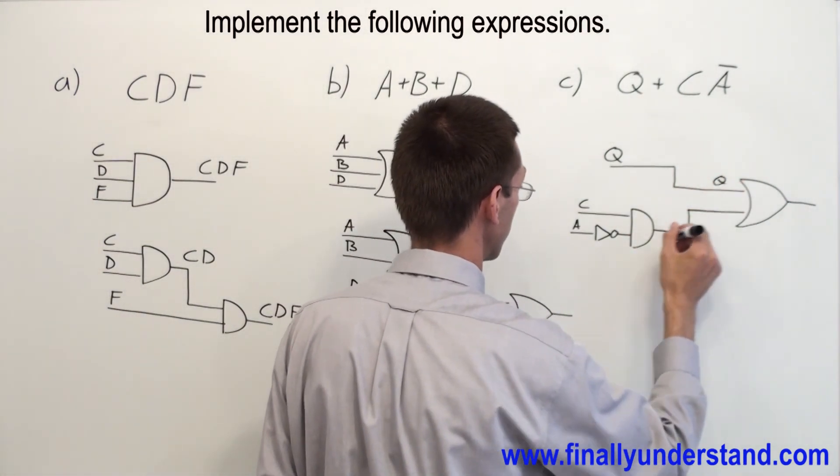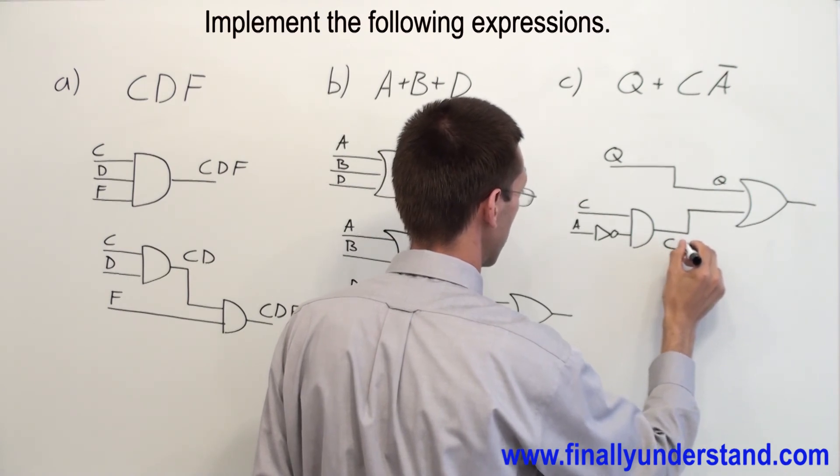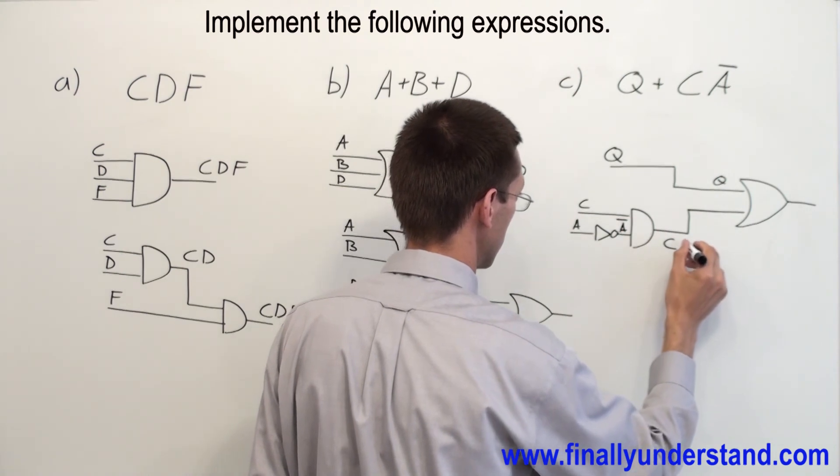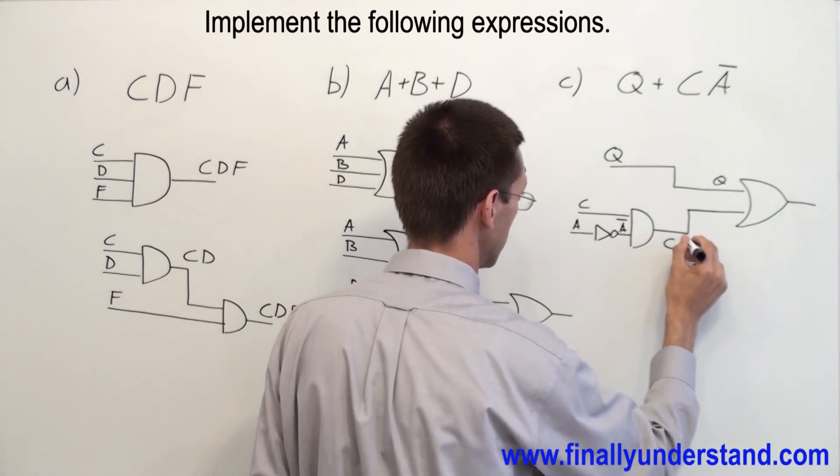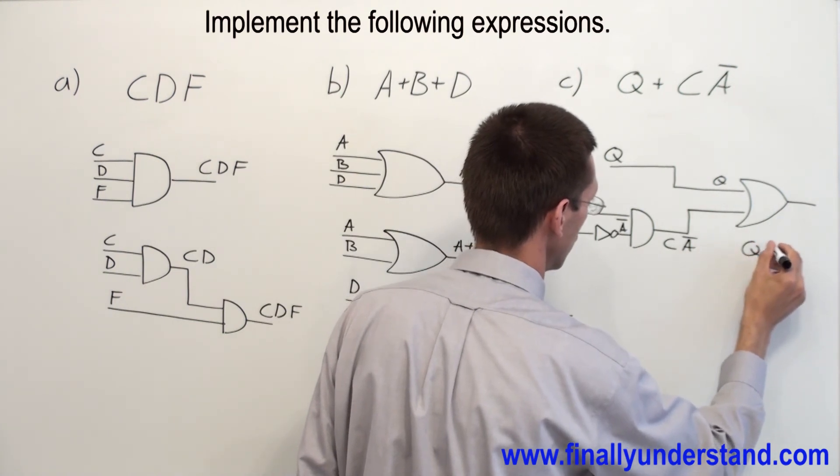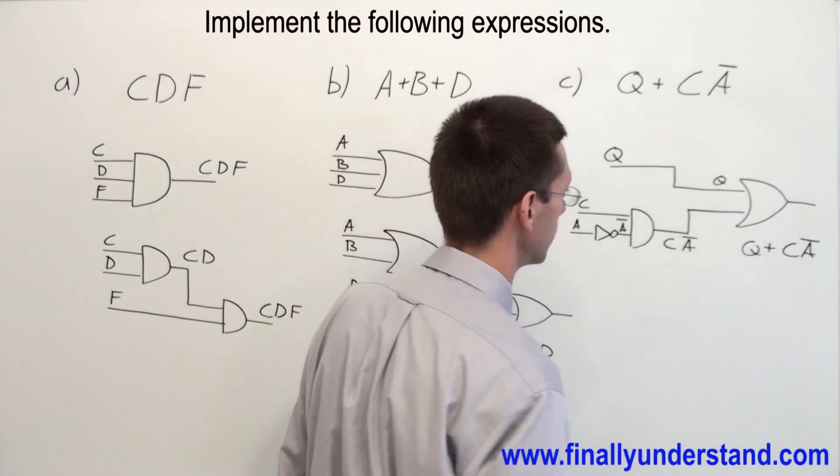So I am going to have over here Q. This is going to be C. And this is my A bar, AND it with A bar. And on the output I am going to have Q or C A bar.